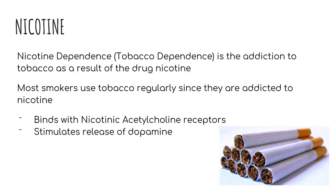Nicotine is a real-world example of an agonist. It binds to acetylcholine receptors, which triggers the release of more acetylcholine neurotransmitters, which is why it is considered an agonist. The reason why nicotine addiction is so common is because it stimulates the release of dopamine and endorphins, which activates the reward pathway.